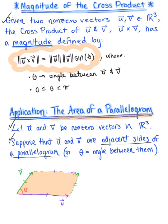The region we're shading — the area of our parallelogram — is defined as the magnitude of vector u cross vector v, in square units. We need to explore this a little bit deeper. Where does this come from? Let's derive this equation.